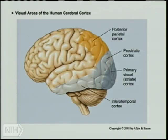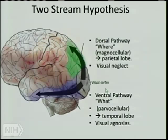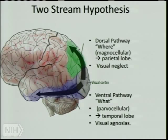Here's a schematic of the brain: primary visual cortex at the back, with higher association areas going forward. Posterior parietal cortex and inferotemporal cortex are important structures. The dorsal stream is the 'where' pathway — mostly magnocellular input going toward the parietal lobe. Damage to this area can cause visual neglect, usually of the left side of space. The ventral stream is the 'what' pathway, mostly parvocellular, going toward the temporal lobe and causing agnosias when damaged.